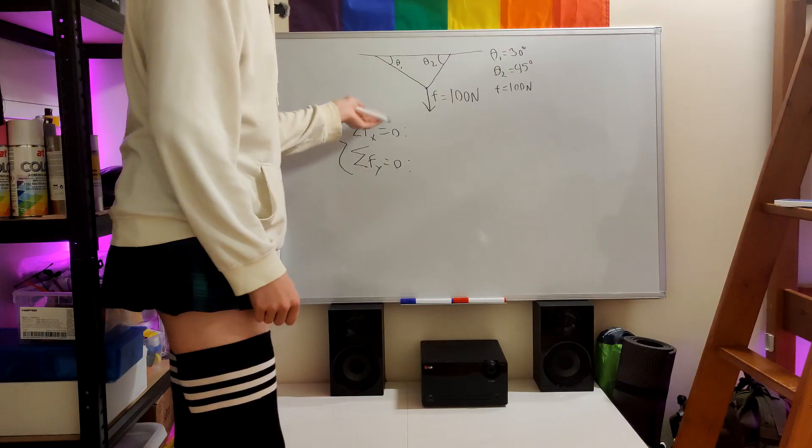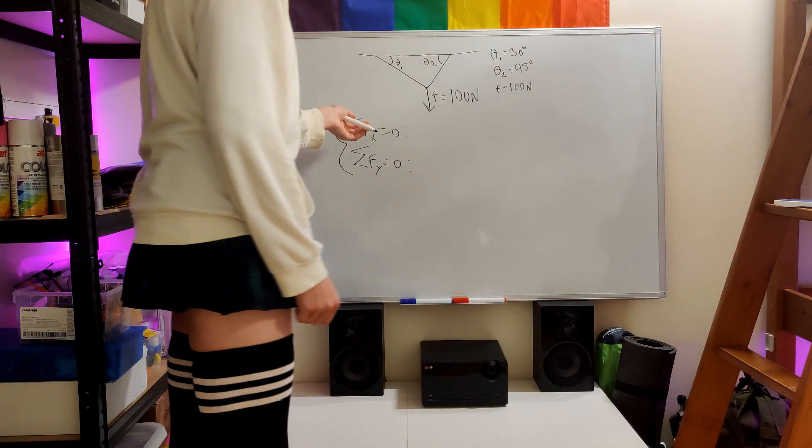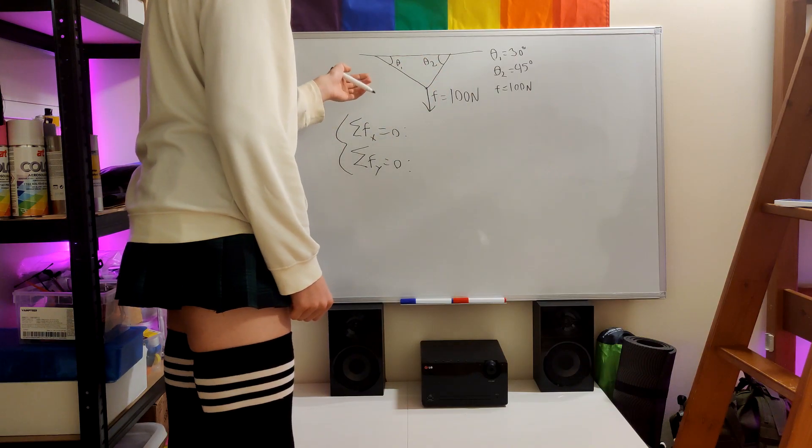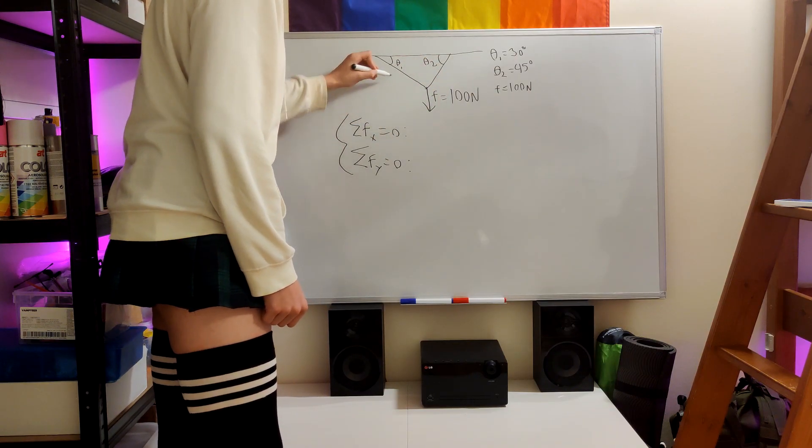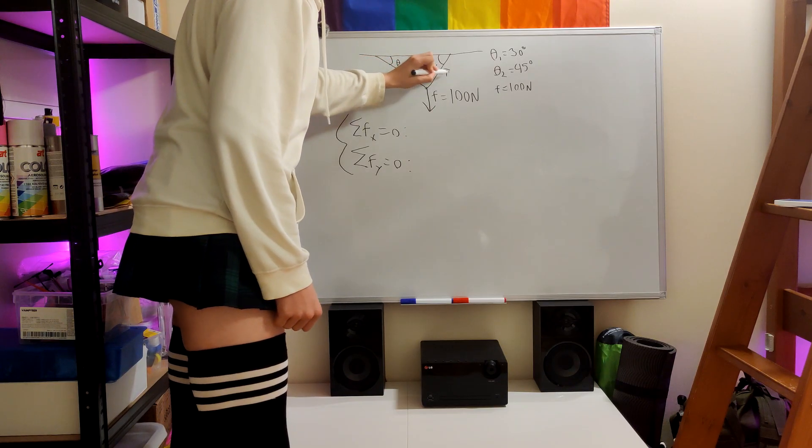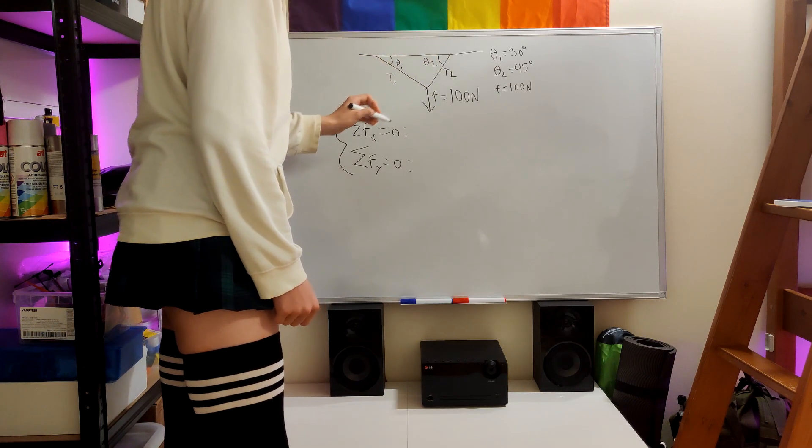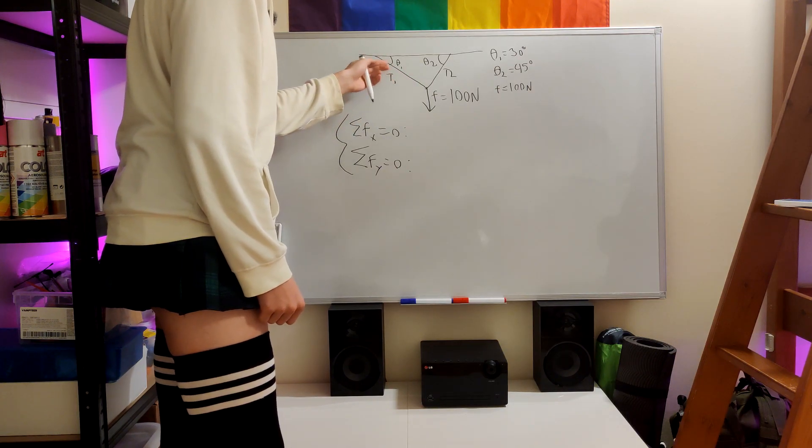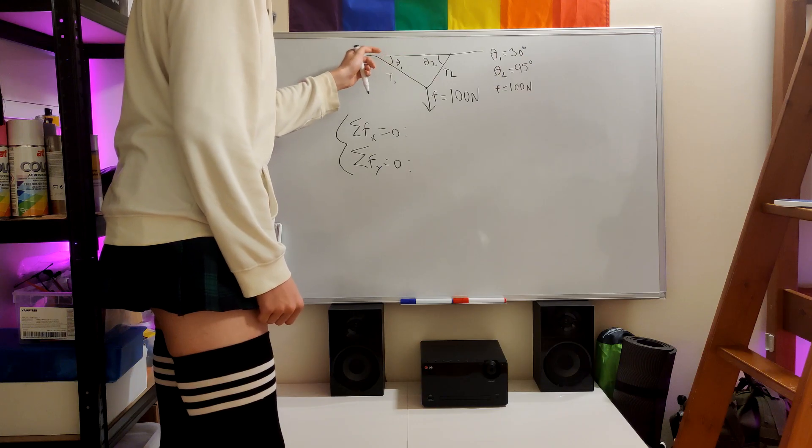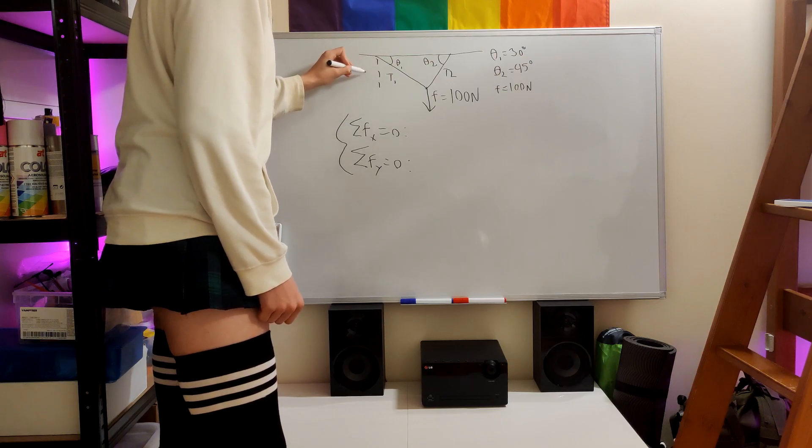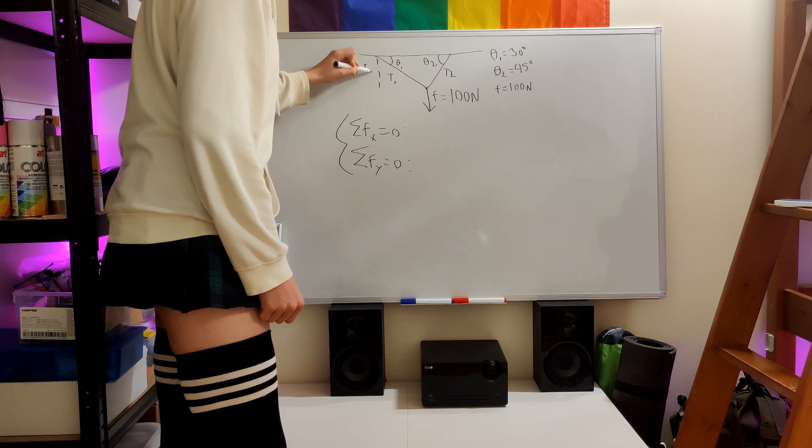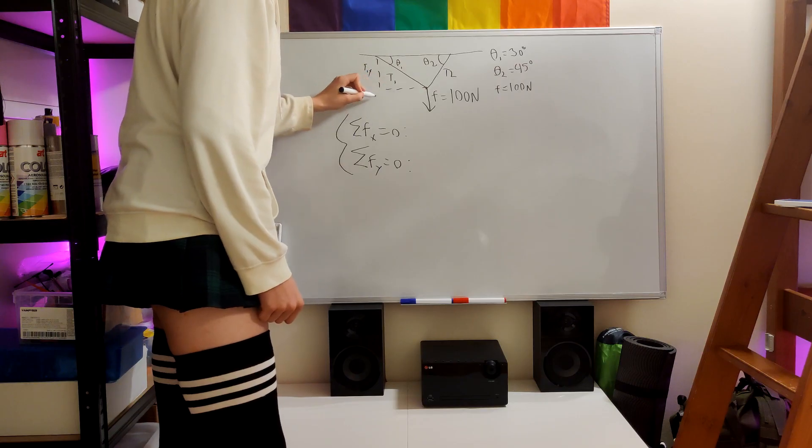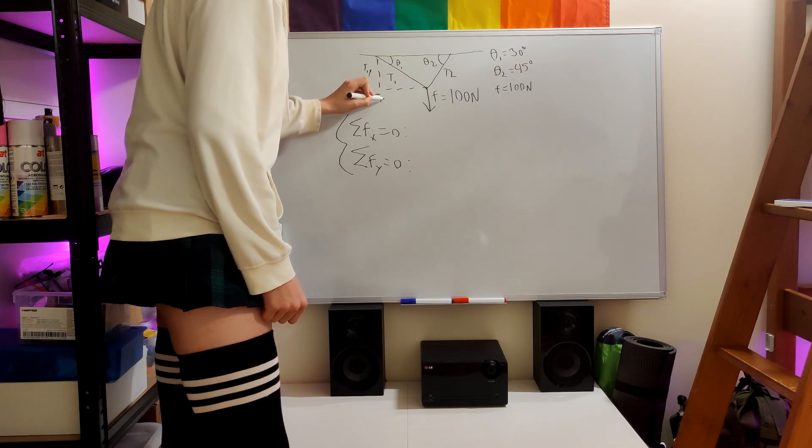So to make these equations, we have to first take into account these angles right here. First, let's call this T1 and T2, the tension forces. The tension force times sine of this equals the vertical component, which is T1y, and the horizontal one is cosine T1x.